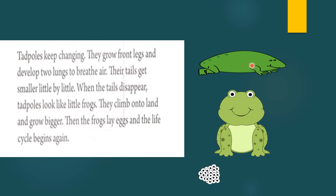Tadpoles keep changing — they grow front legs and develop two lungs to breathe air. Their tail gets smaller little by little. When the tail disappears, tadpoles look like a little frog. They climb onto land and grow bigger, then the frog lays eggs.